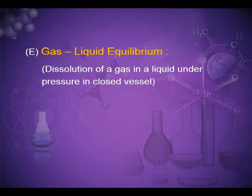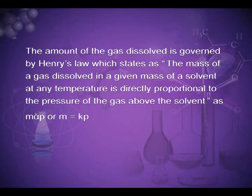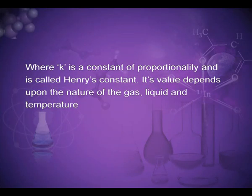The last physical equilibrium is gas-liquid equilibrium — dissolution of a gas in a liquid under pressure in a closed vessel. The best example is a soda water bottle, where the equilibrium is CO₂(g) ⇌ CO₂(solution). The amount of gas dissolved is governed by Henry's law: the mass of a gas dissolved in a given mass of solvent at any temperature is directly proportional to the pressure of the gas above the solvent — M = KP, where K is Henry's constant. Its value depends on the nature of the gas, liquid, and temperature.